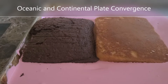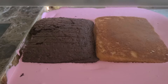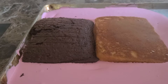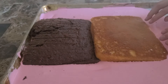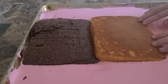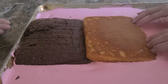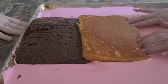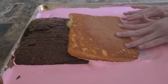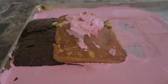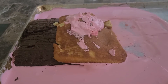As my first example I will be showing the convergence of two plates. The chocolate cake is our oceanic plate. The vanilla cake is our continental plate. When these plates converge, the oceanic plate goes under the continental plate. Often when this happens, volcanoes are formed.